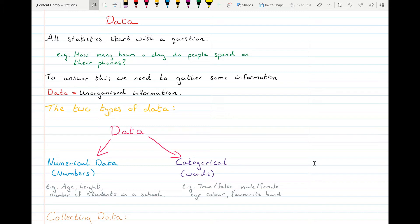There are two types of data. Numerical data, which are numbers - the clue is in the numeric. That would be your age, height, number of students in a school, all number values. So they're numerical data.